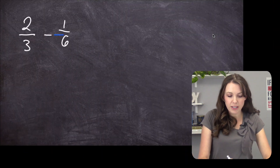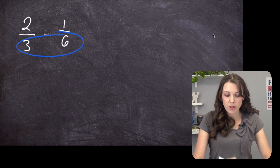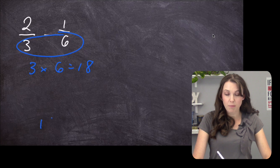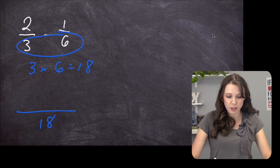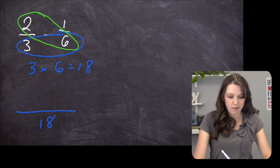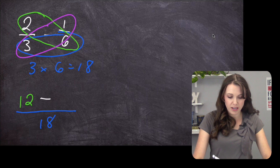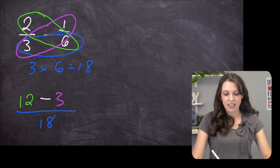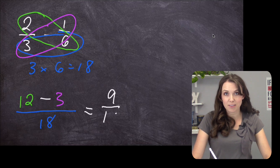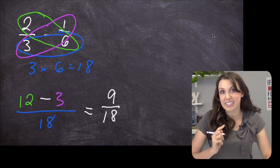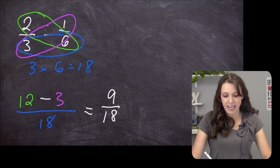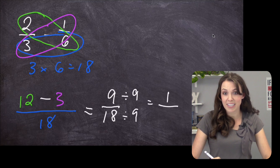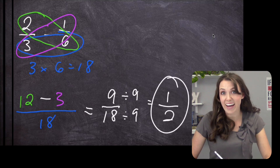What we have to do is make sure that the bottom number is the same. So we're going to go three times six, which is 18. Our 18 is going to be on the bottom — that's called the denominator. Now we go two times six, which is 12, minus one times three, which is 3. So 12 minus 3 is 9 over 18. We can reduce: 9 goes into both 9 and 18, so we divide both by 9. Nine goes into 9 one time, nine goes into 18 two times, so our answer is one half.